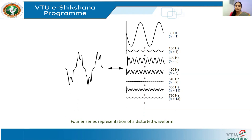We show only odd harmonics because the input waveform is symmetric with respect to the x-axis — its positive and negative half cycles are of identical shape. In such waveforms, only odd harmonics are present. You can also observe that as the harmonic order increases, the amplitude of each harmonic component reduces significantly, becoming negligible at higher orders.